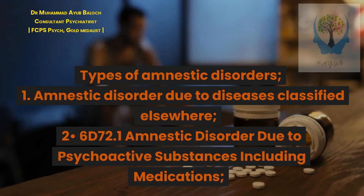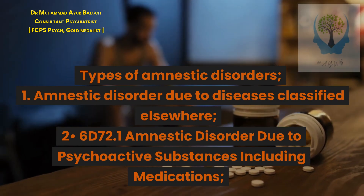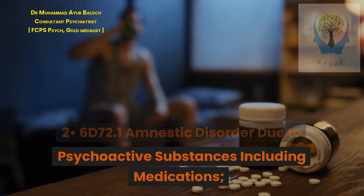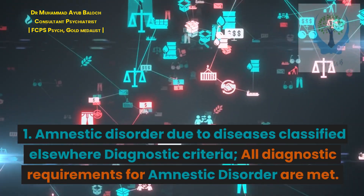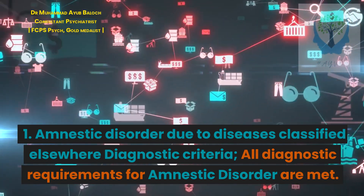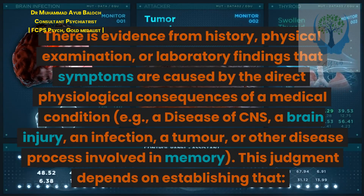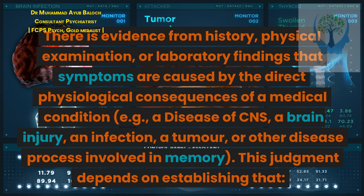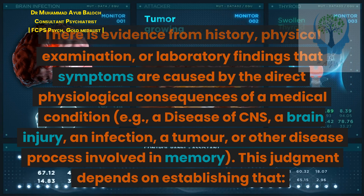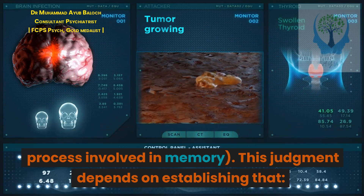Types of amnestic disorders. 1. Amnestic disorder due to diseases classified elsewhere. 2. 6072.1 Amnestic disorder due to psychoactive substances including medications. Diagnostic criteria for amnestic disorder due to diseases classified elsewhere: all diagnostic requirements for amnestic disorder are met, and there is evidence from history, physical examination, or laboratory findings that symptoms are caused by the direct physiological consequences of a medical condition, for example a disease of the CNS, a brain injury, an infection, a tumor, or other disease process involved in memory.